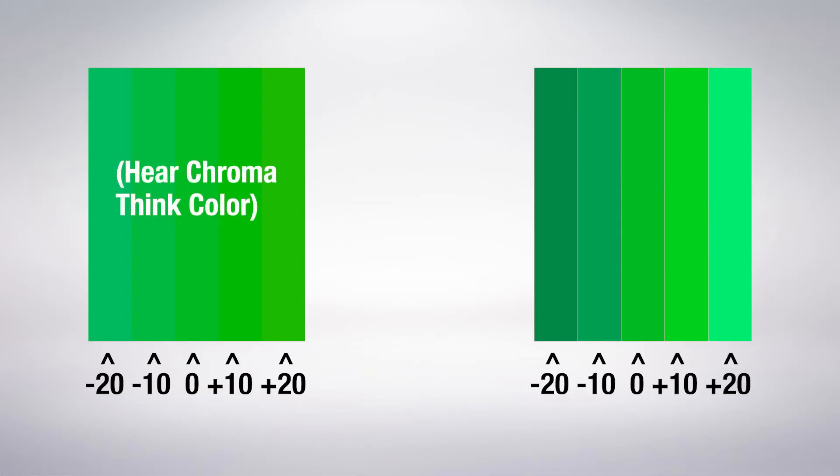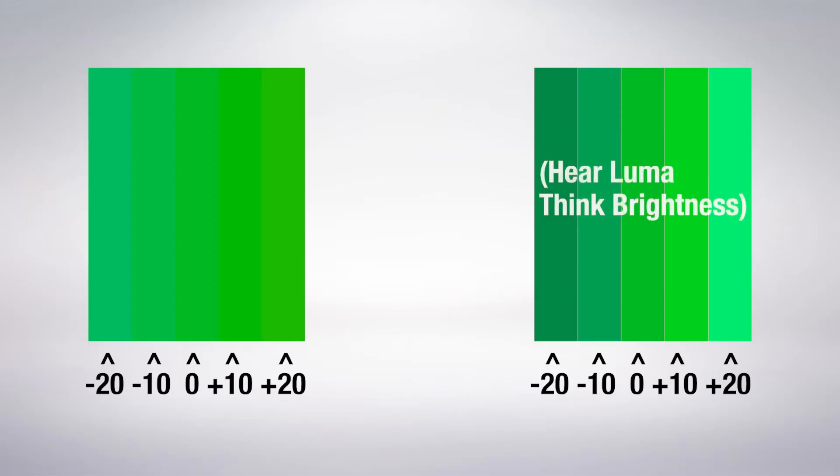Interestingly enough, they are both equally different. The box on the left is comprised of 5 rectangles of green that change only chrominance by 10 numerics. The box on the right is comprised of 5 rectangles of green that change only luminance by 10 numerics.